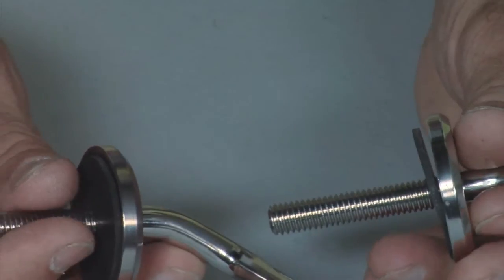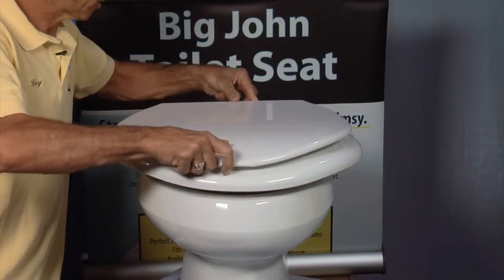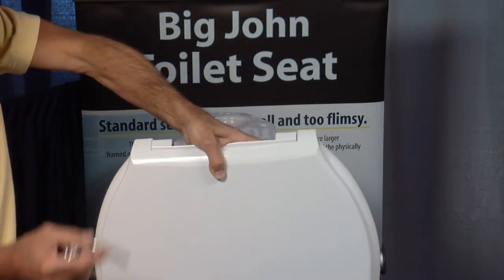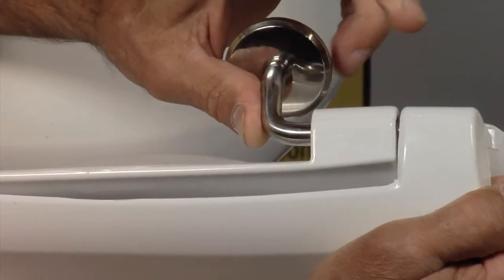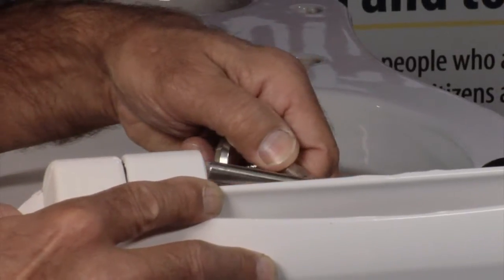Notice that the hinges are marked left and right. With the seat in place, put the right hinge through the lid into the right side and the left hinge through the left side.